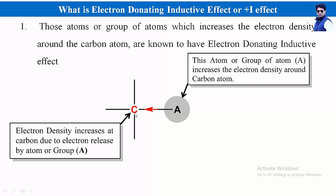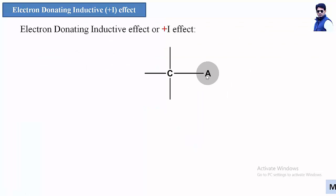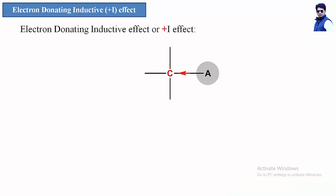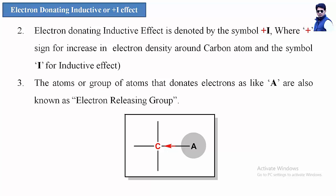The electron density at carbon increases due to release of electrons by atom A. When A releases electron density to the carbon atom, the electron density around carbon increases. The blinking arrow indicates the direction of flow of electrons towards the carbon atom, showing an increase in electron density. The electron donating inductive effect is denoted by the symbol plus I, where plus represents the increase in electron density and I stands for inductive effect.